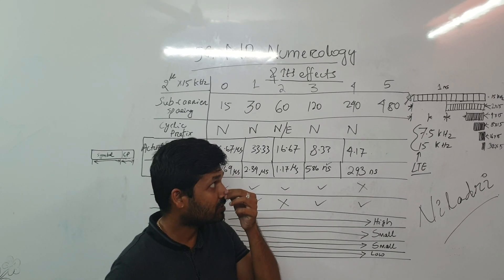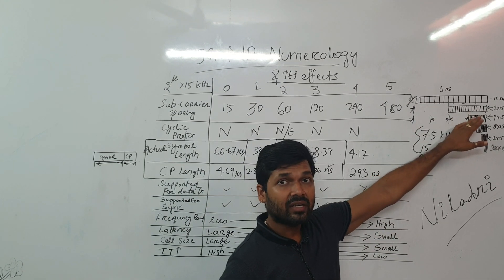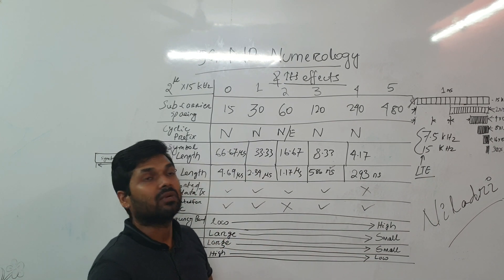That also we have discussed in our previous chapters. And then the 1 millisecond for different subcarrier spacing, we transmit different number of symbols.